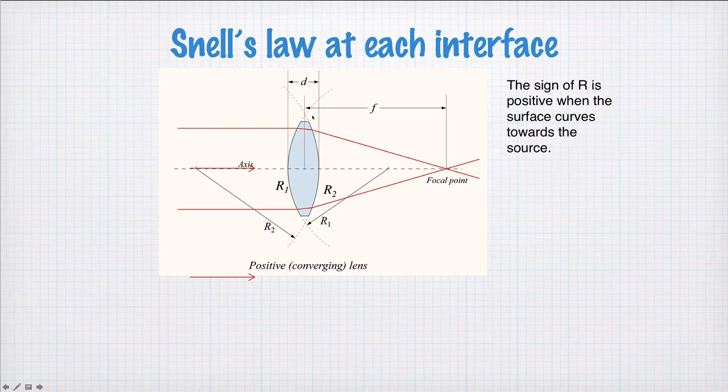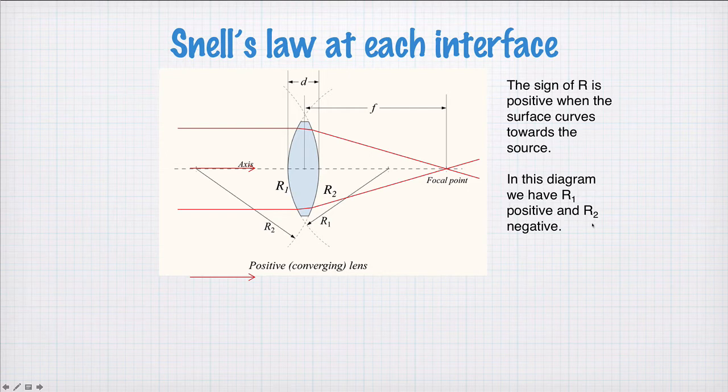r2 is bending away from the source, so r2 is negative. In this diagram we have r1 positive and r2 negative.